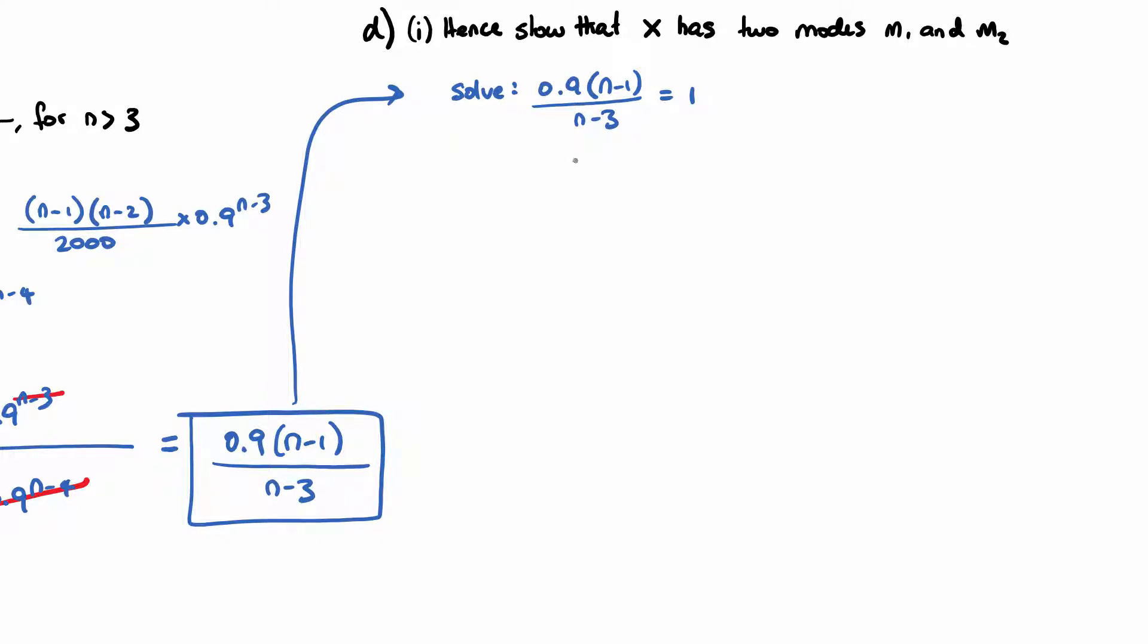So if I times the N-3 up, I get 0.9(N-1) equals N-3. I can expand and simplify. So 0.9N - 0.9 equals N - 3. I can move the 0.9 over as a negative. So 0.1N will equal 2.1 once I add 3. So therefore, N equals, times both by 10, 21.